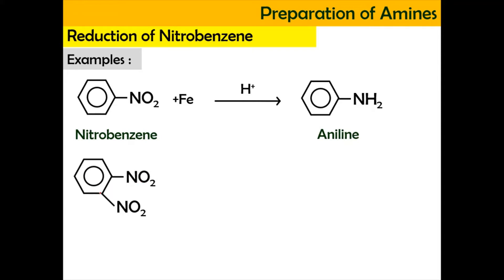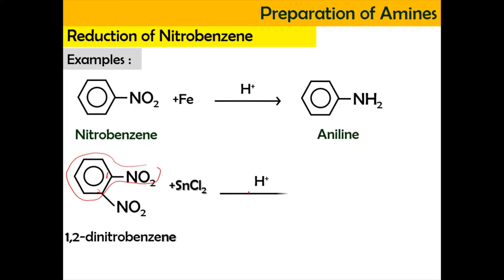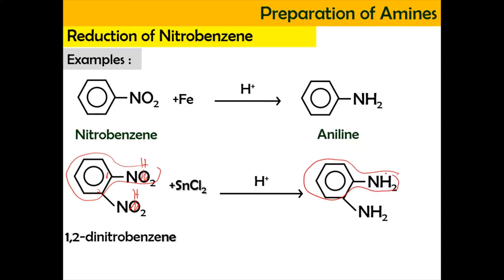You can also do the reduction of 1,2-dinitrobenzene. This has a nitro group at carbon number 1 and carbon number 2. If you use tin(II) chloride (SnCl2) in the presence of H⁺ (acidic condition), the NO2 groups will both be changed into NH2, giving aniline groups at carbon 1 and carbon 2. So it's going to become 2-aminoaniline.